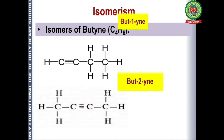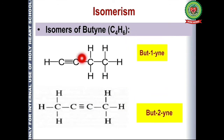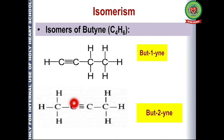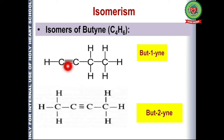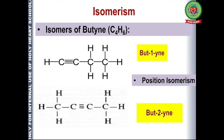In the first case, there are four carbons with the triple bond at the first position, so the name is but-1-yne. In the second case, the triple bond shifts to the second position, so the name is but-2-yne. Since the position of the functional group changes, these are known as position isomers. When the position of any functional group changes, we call it a position isomer.